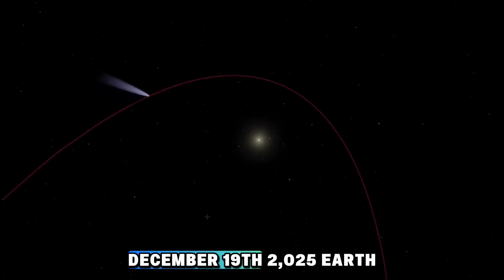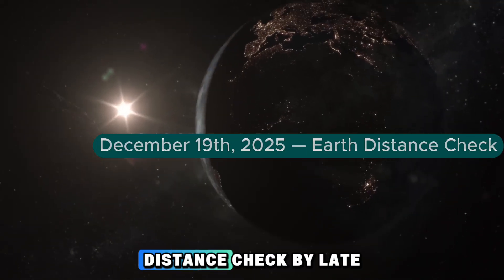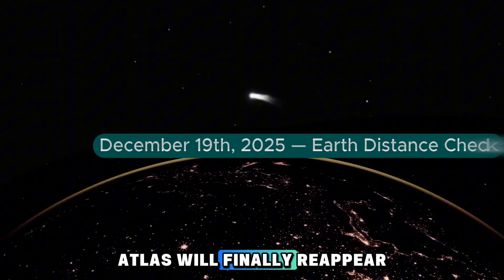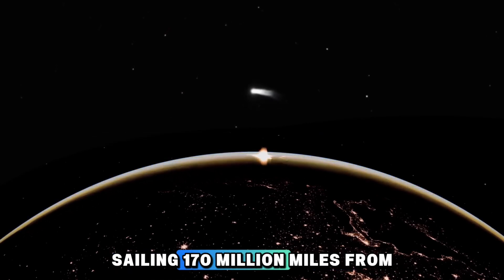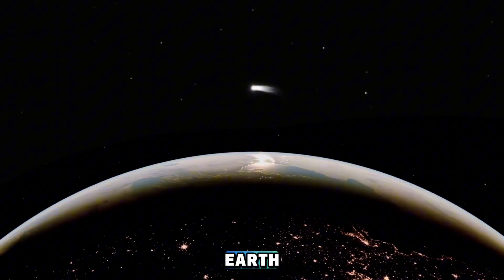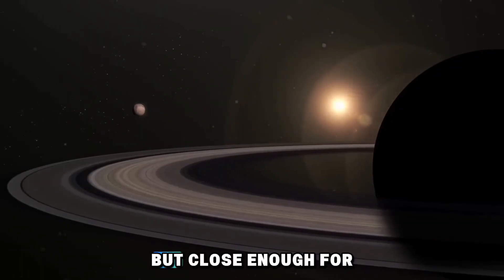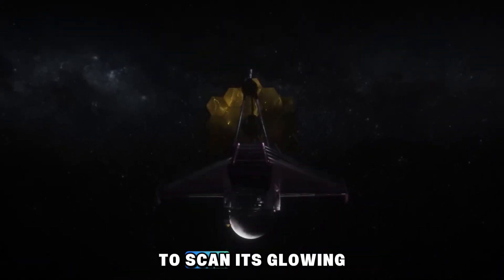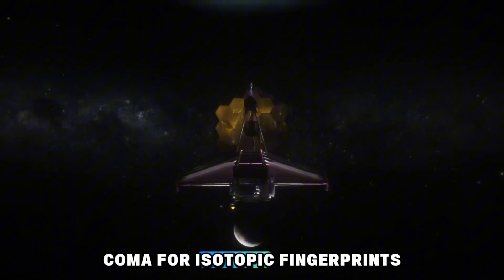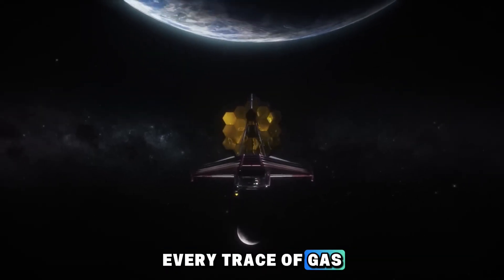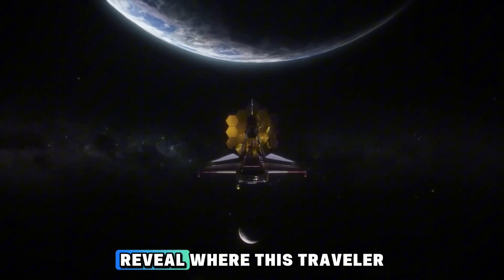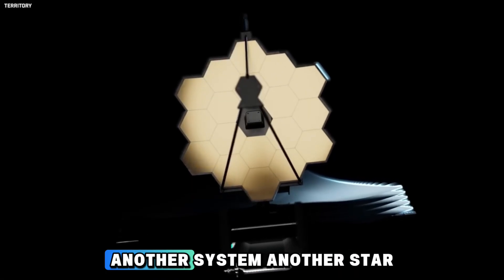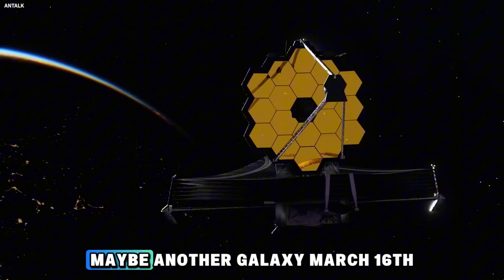December 19th, 2025. Earth Distance Check. By late December, Atlas will finally reappear, sailing 170 million miles from Earth, too far to see with the naked eye, but close enough for the James Webb Telescope and Vera Rubin Observatory to scan its glowing coma for isotopic fingerprints. Every trace of gas, every dust particle could reveal where this traveler was born. Another system, another star, maybe another galaxy.